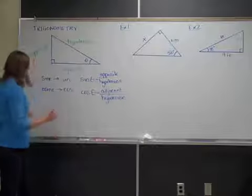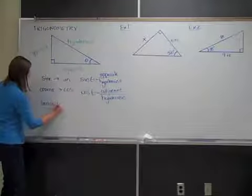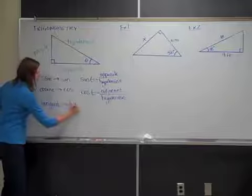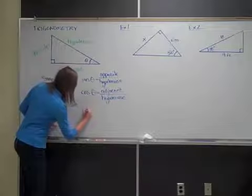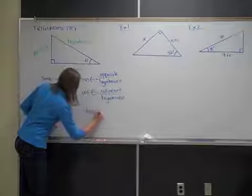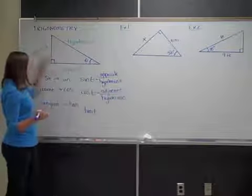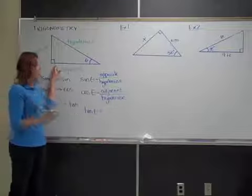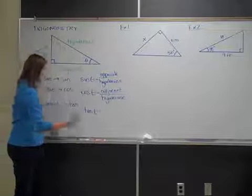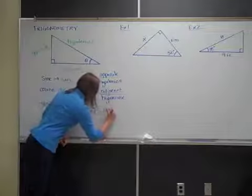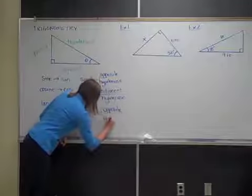The third one is tangent, abbreviated TAN. The equation for tangent is: the tangent of theta equals the opposite over the adjacent. So hypotenuse has no role here — it's the other two legs of the triangle, with opposite in the numerator and adjacent in the denominator.